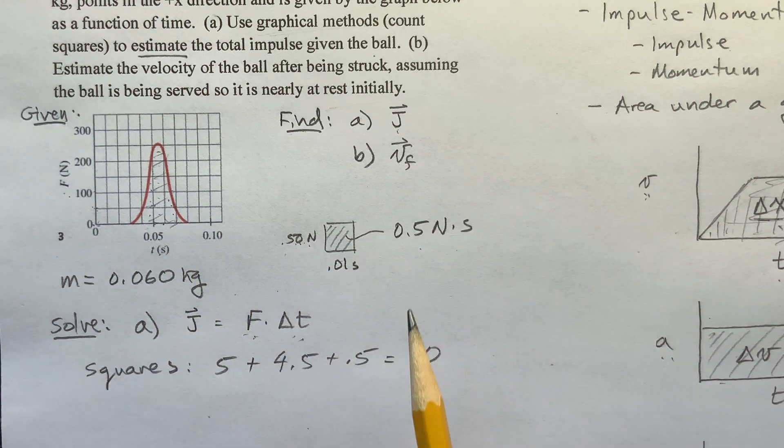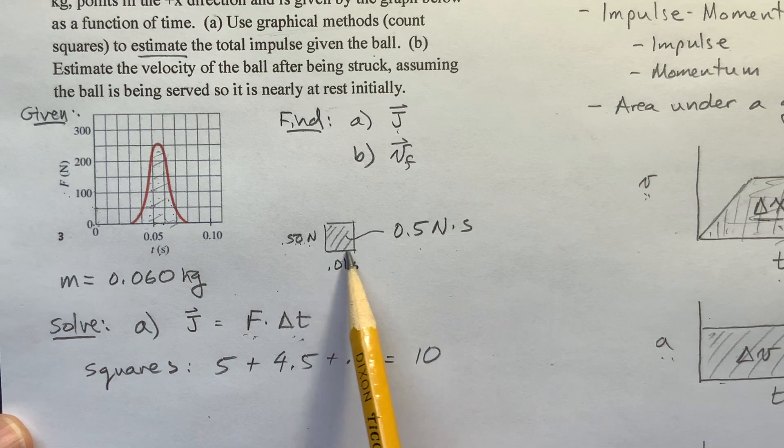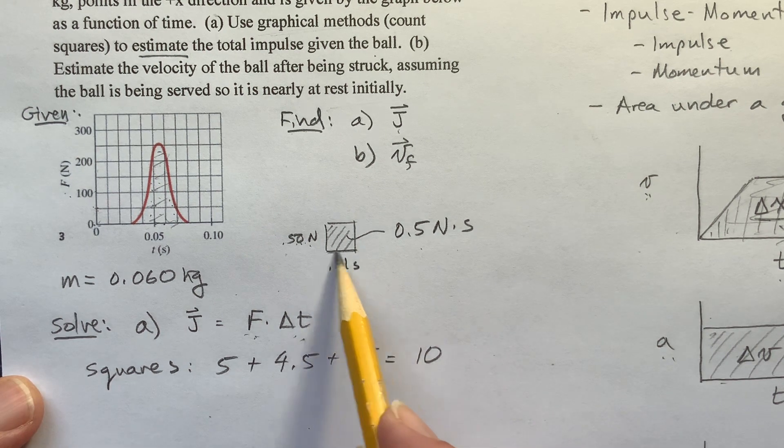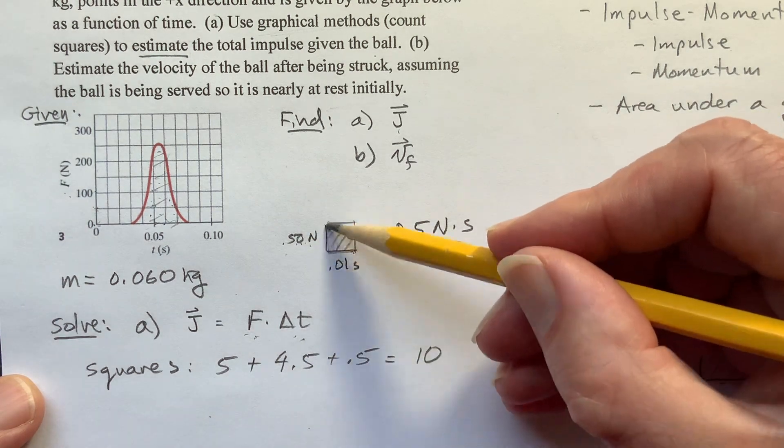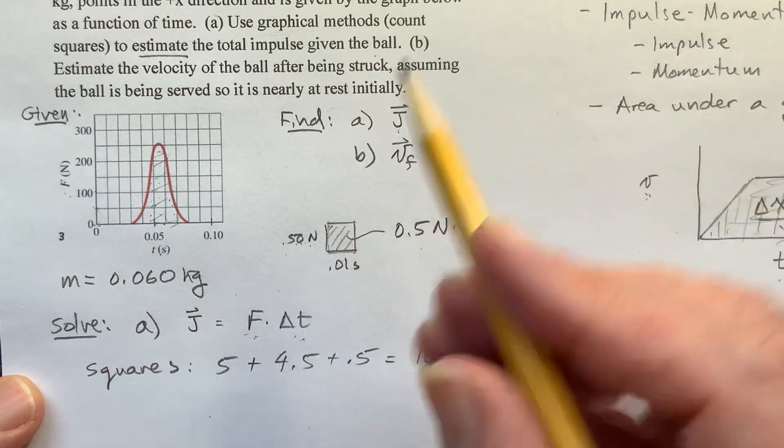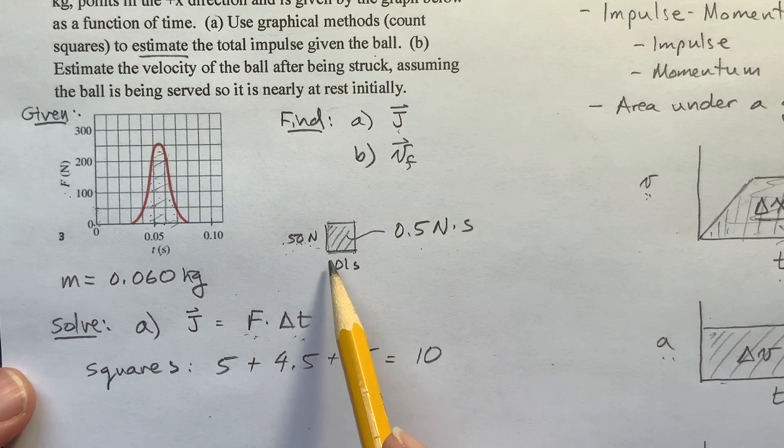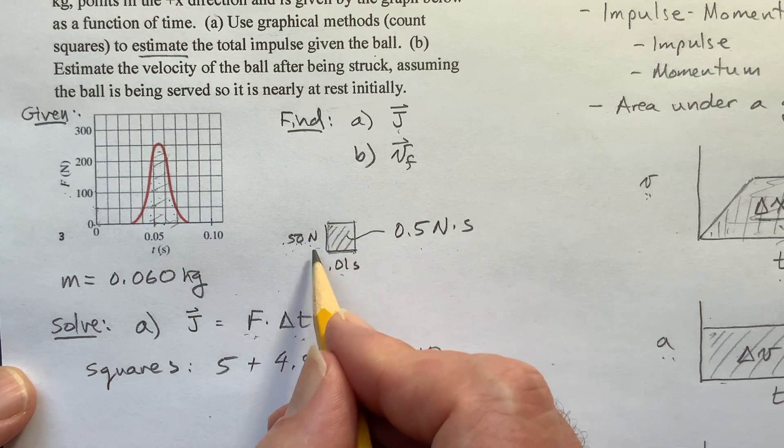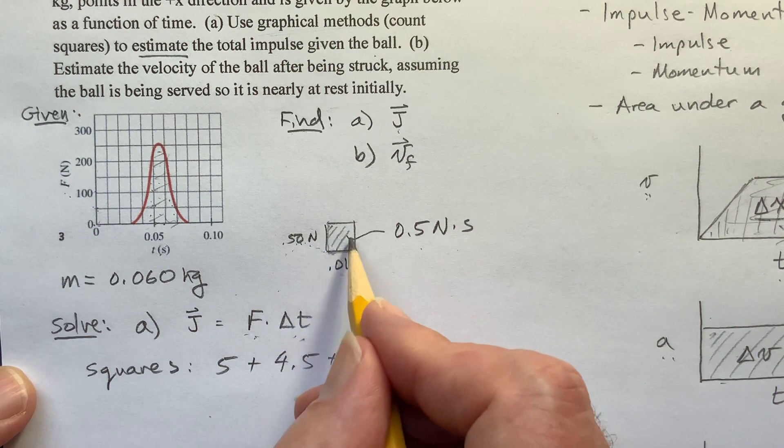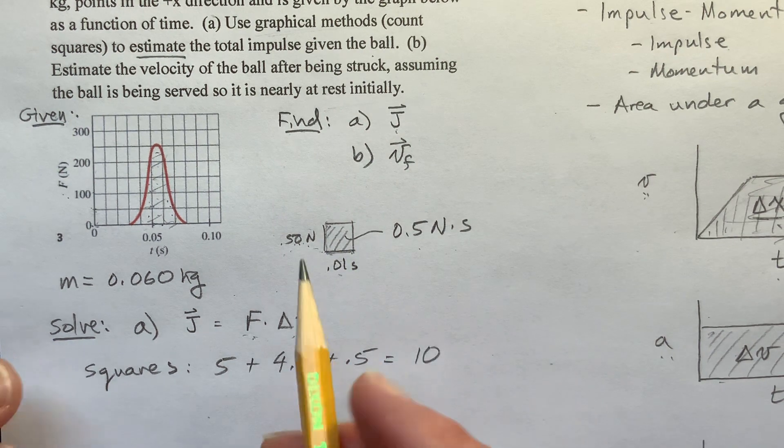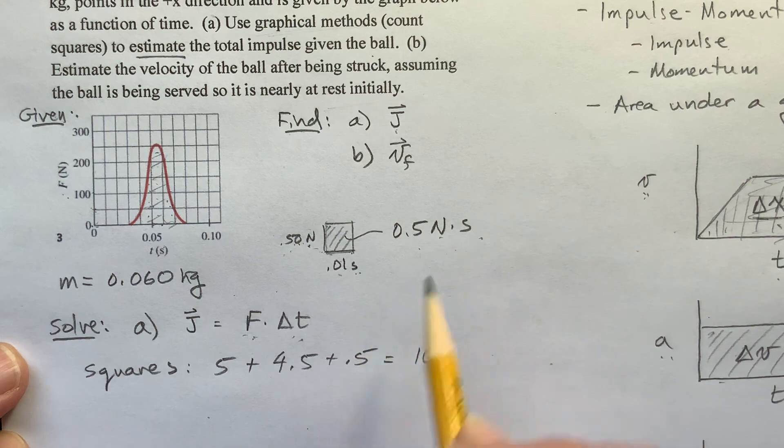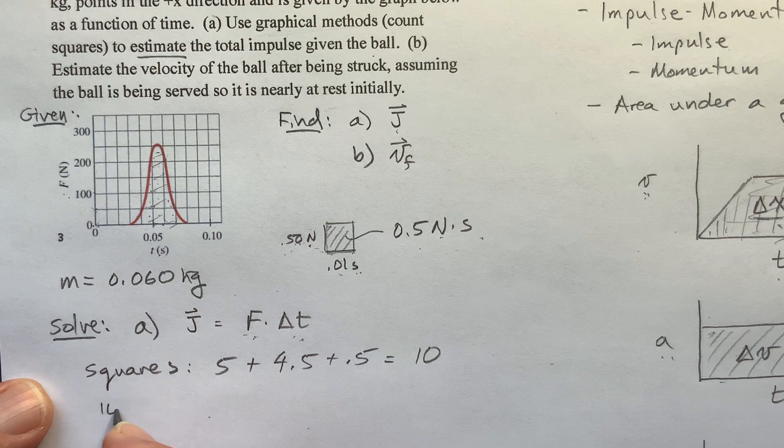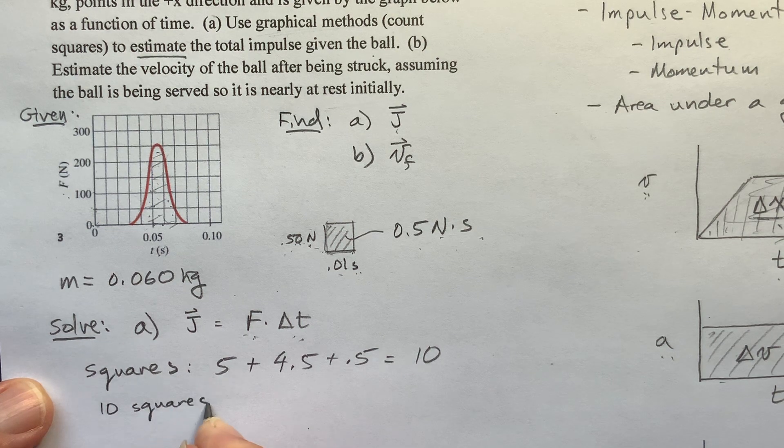So this represents the impulse here. And by the way, this is very common. We're using, you know, you usually think of area as a length times a length. Well, this is not a length, but we're using a length to represent a length. And the height here is not a length, but we're using a length to represent a force, 50 newtons. And so it shouldn't surprise us that the area here is not like square meters or square centimeters, it's the product of newtons times seconds.